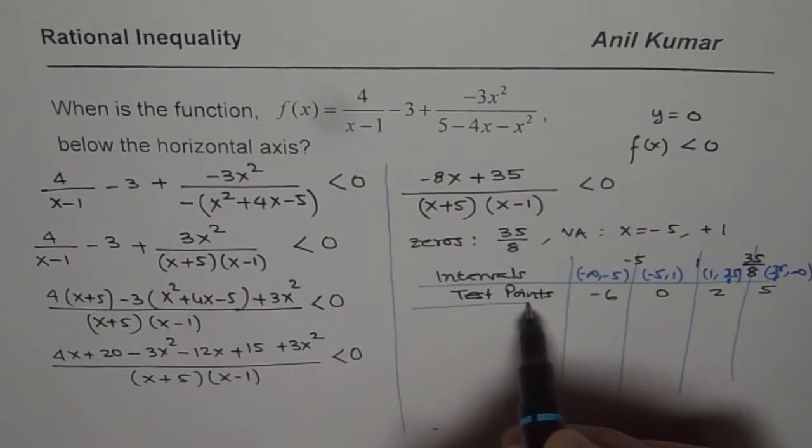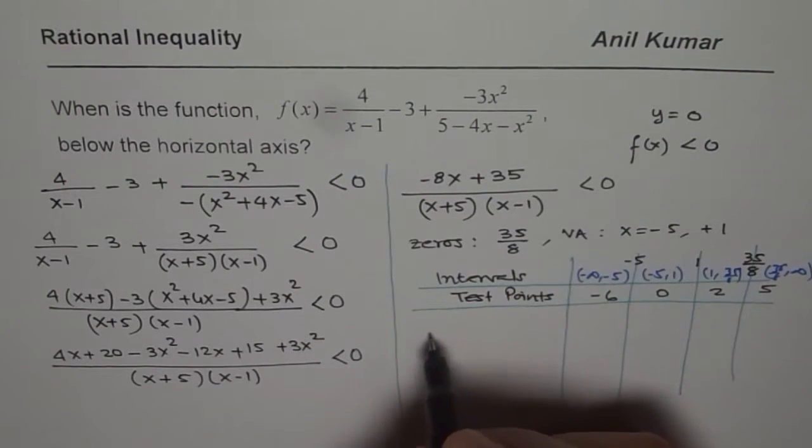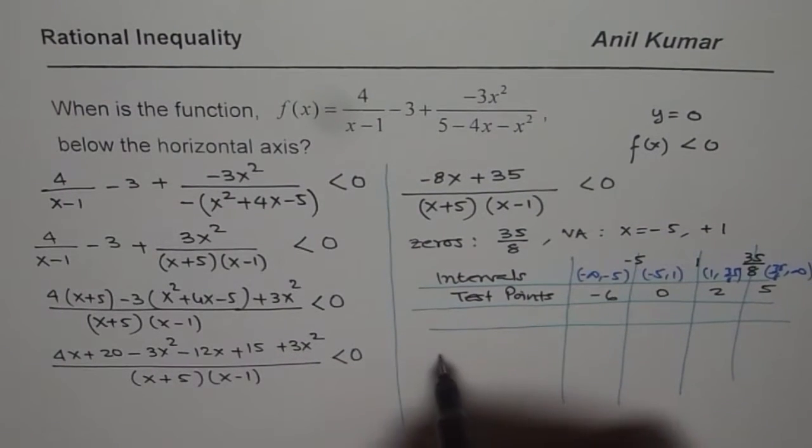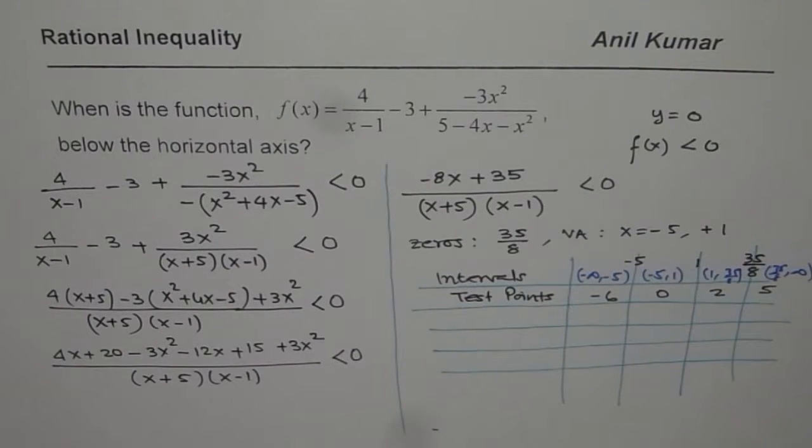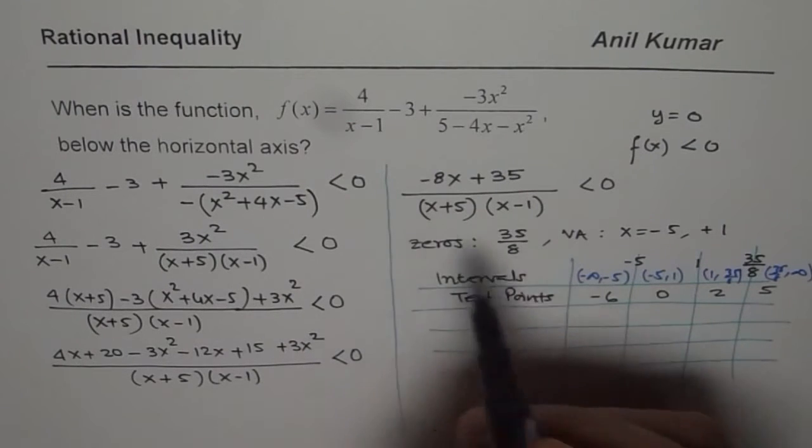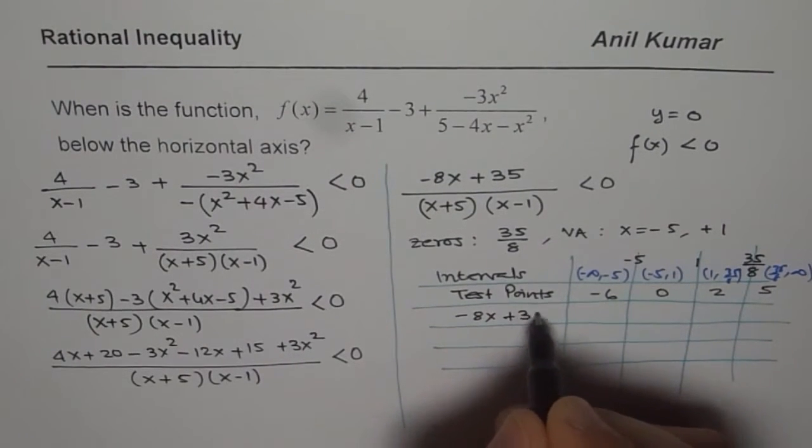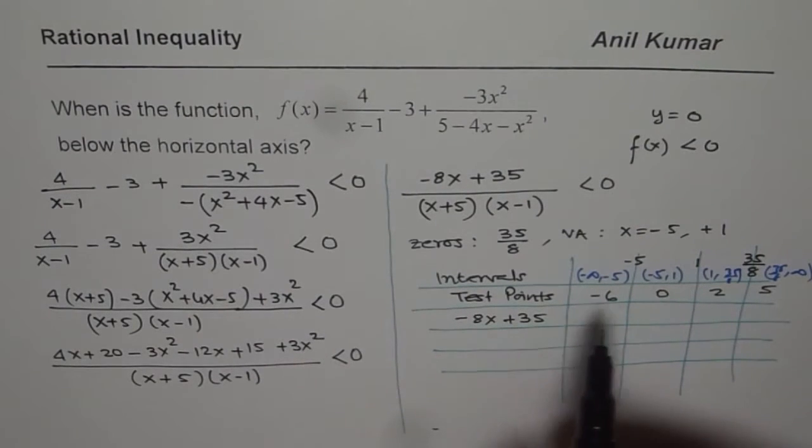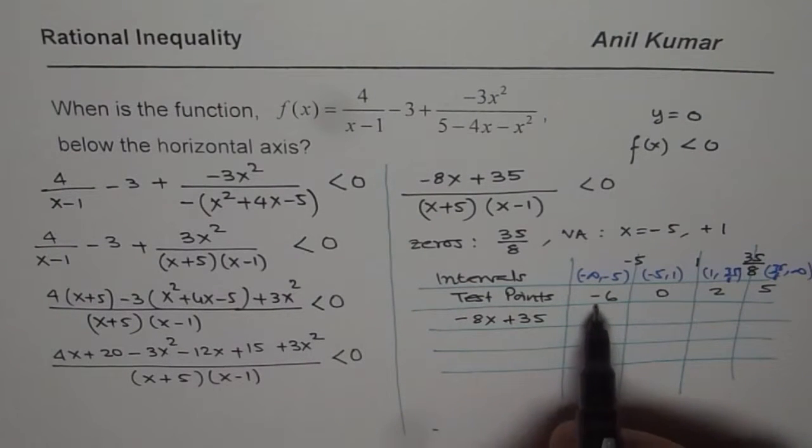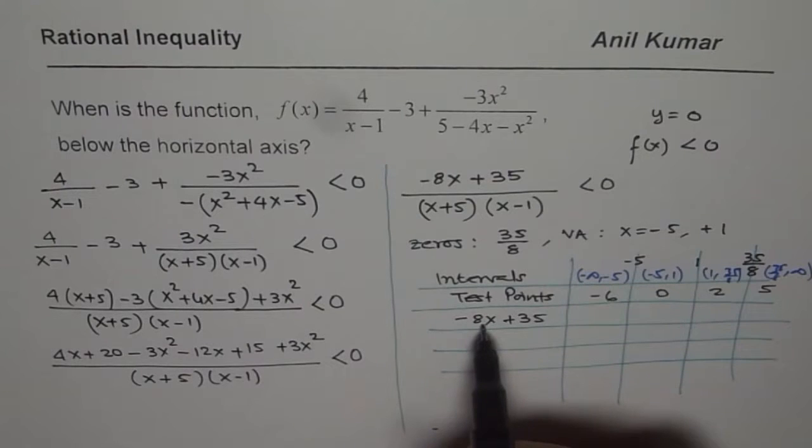Now for each test point, we have to find whether the factors are positive or negative. We don't really have to find their value. So that should help us to get the answer. So the factors are minus 8x plus 35. Now here, if I substitute a negative value for x, this becomes positive.